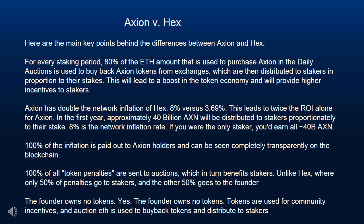Here are the main key points behind the differences between Axion and HEX. For every staking period, 80% of the ETH amount that is used to purchase Axion in the daily auctions is used to buy back Axion tokens from exchanges, which are then distributed to stakers in proportion to their stakes.